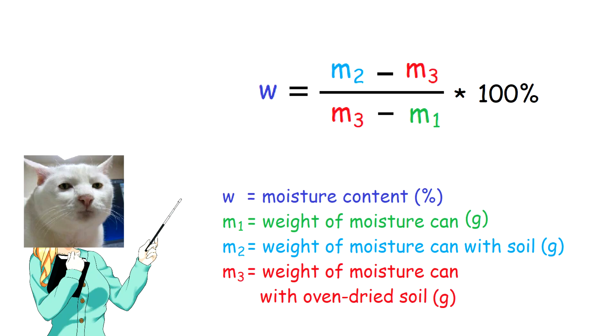You can calculate the moisture content, W, to the nearest 0.1% by using this equation.